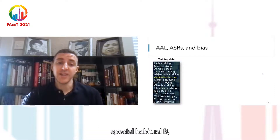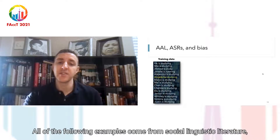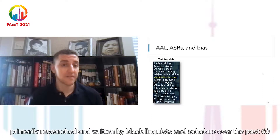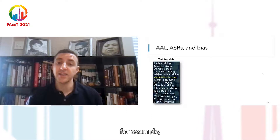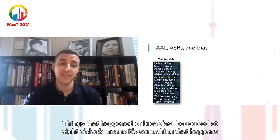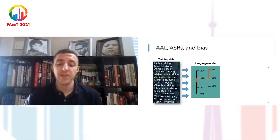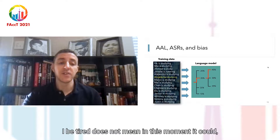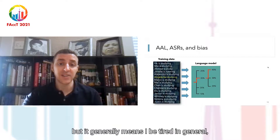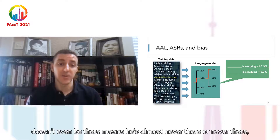If we have training data that has many instances of the present progressive but only one instance of habitual B, we know that habitual B there signifies something very different. 'Alejandra is studying' means right now, but 'Angela B studying' means habitually — two very different things. But if a language model were created based on this training data, whether statistical or neural, and a user were to say 'Angela B studying,' the most likely outcome is that the ASR would output 'Angela is studying,' which we know means something very different and would be incorrect.